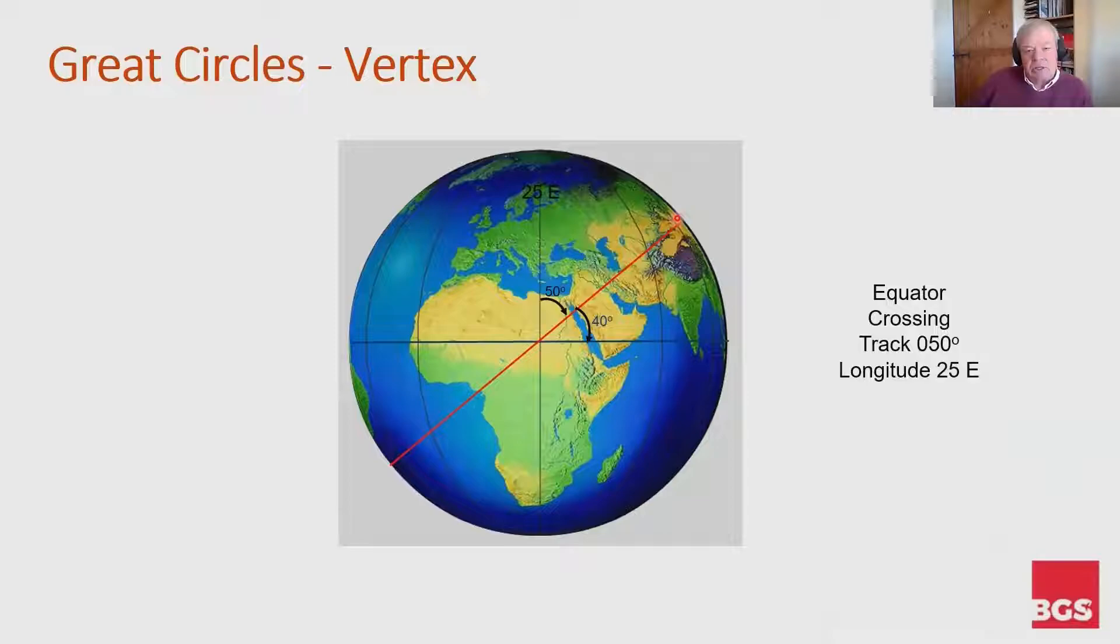So it's at 40 degrees north. And if you imagine that this line has got to go 180 degrees to get to the equator on the other side of the earth, therefore that northern vertex will be 90 degrees further on from where it crossed the equator, which is at 25 east. So the northern vertex is going to be at 40 north and 115 degrees east, i.e. 25 plus 90.